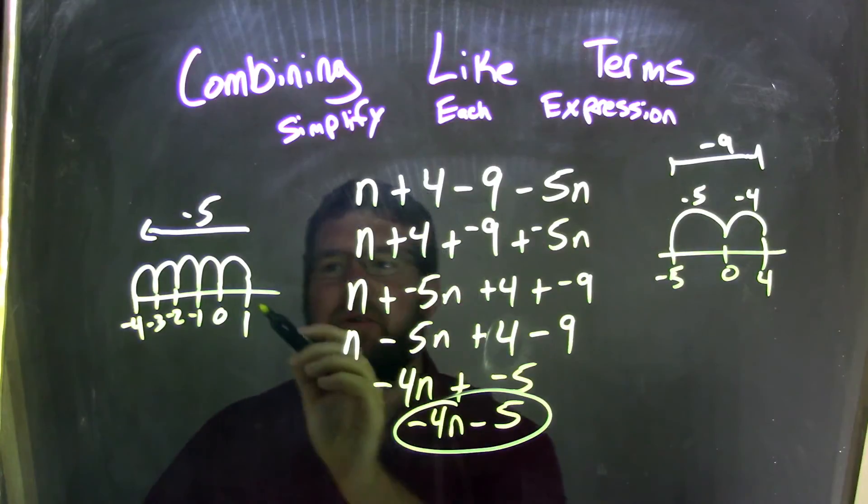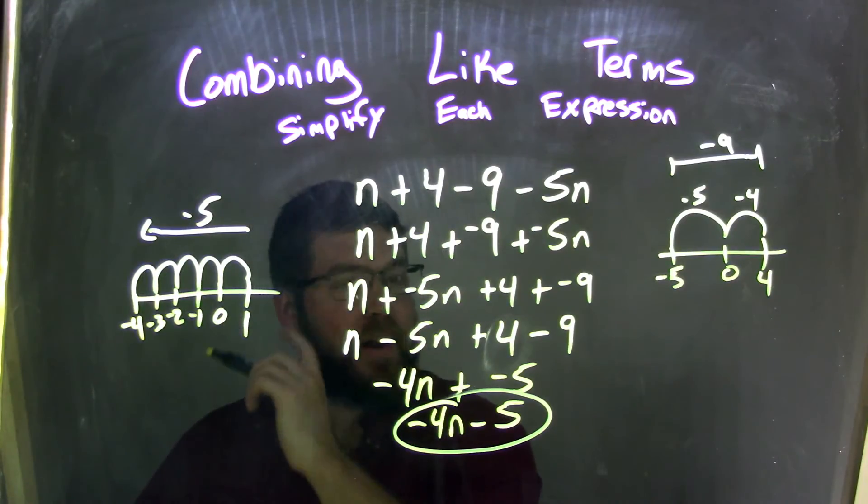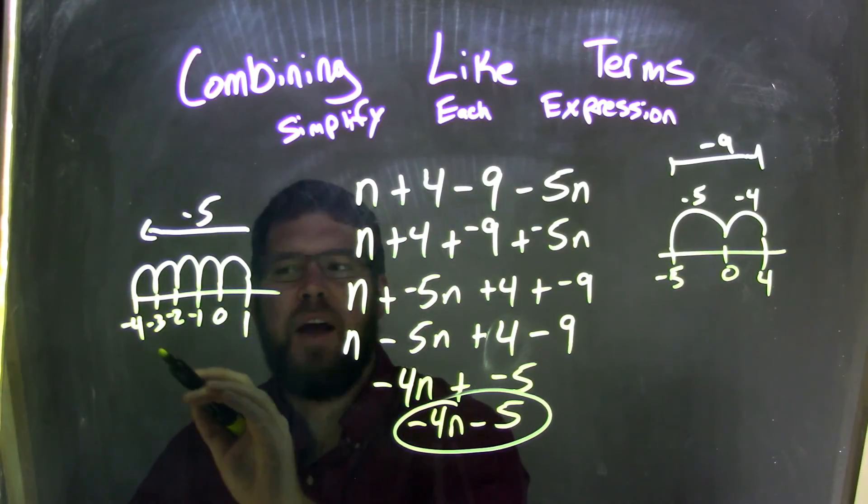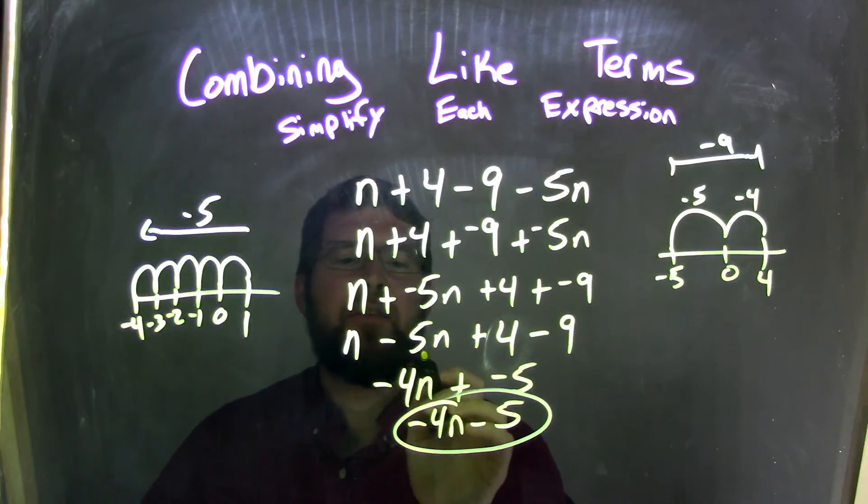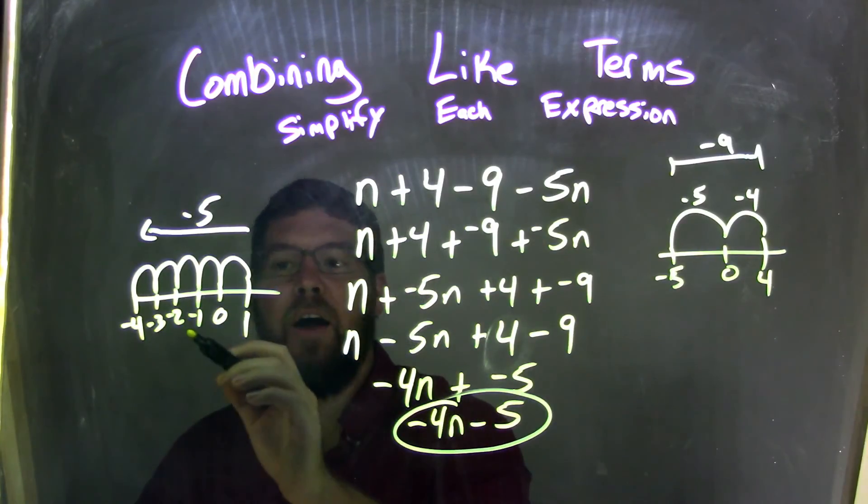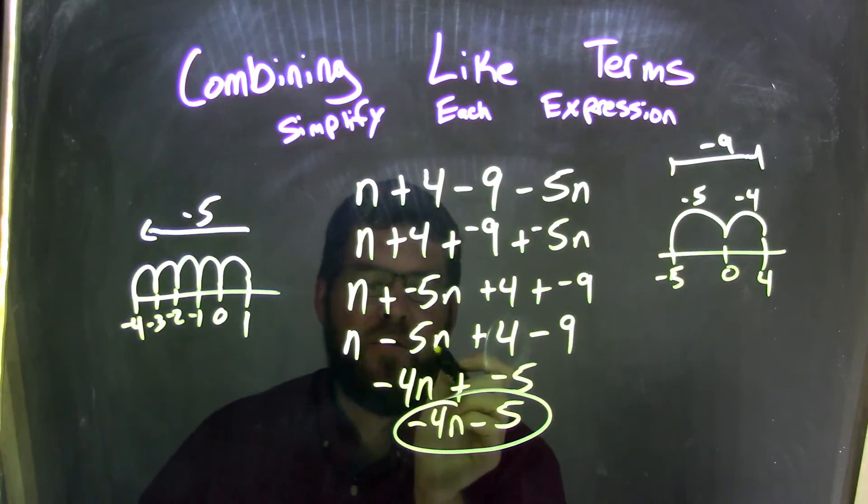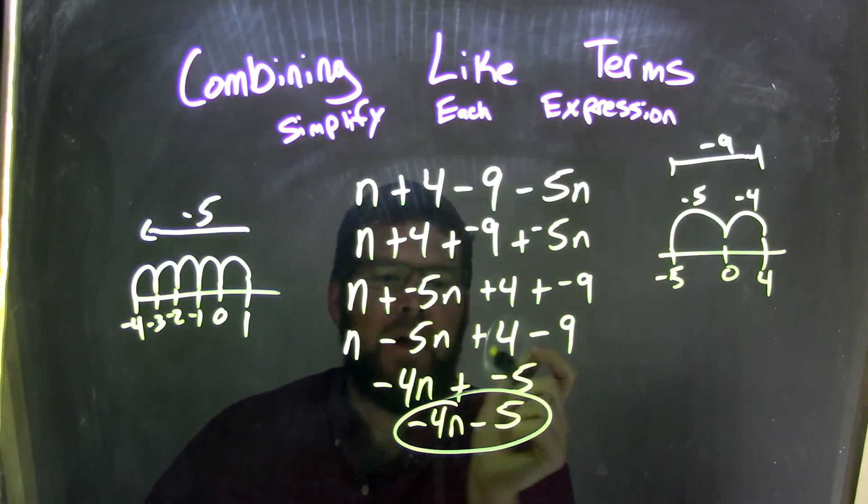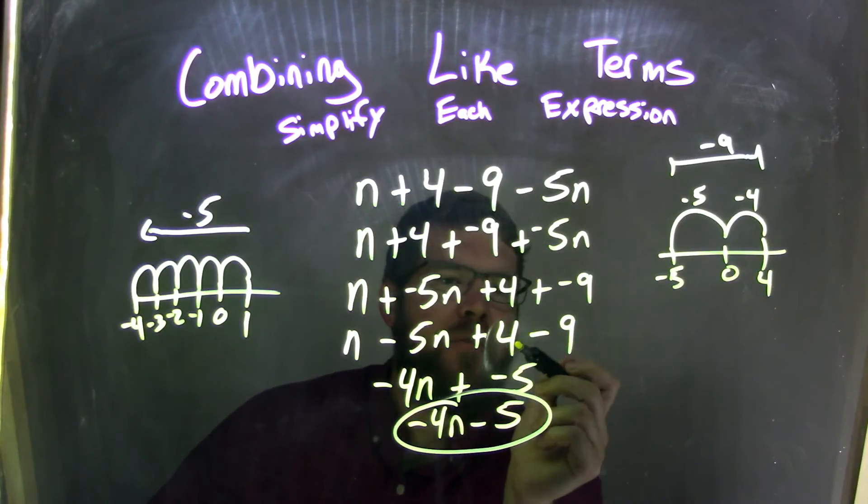Well, n minus 5n, I used the number line here to help me out. Minus 5 units got me to negative 4. So n minus 5n, 1 minus 5 is the same thing as negative, or n minus 5n, which is negative 4n. Brought down the plus sign.